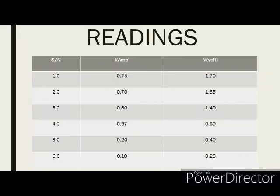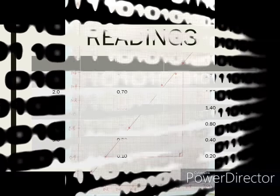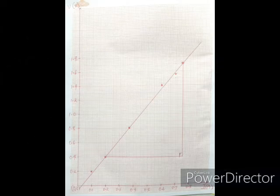So our expectation for this graph is that it is going to be a straight line graph from the origin when we plot a graph of V against I. Now you can see the graph we have here. It's a straight line graph though it is not perfectly from the origin but you can see that it's very close to it.